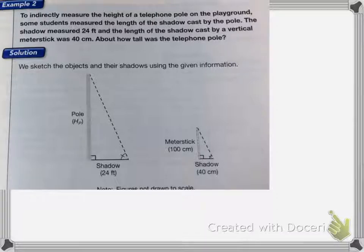With indirect measure, that is where we try to figure out the height of something by using your knowledge of proportions to figure out the height of something else. To indirectly measure the height of a telephone pole on the playground, some students measured the length of the shadow cast by the pole. The shadow measured 24 feet and the length of the shadow cast by a vertical meter stick was 40 centimeters. About how tall was the telephone pole? First you're going to sketch the shadows and put in the given information. Now we're going to use a ratio box to solve for our missing height.